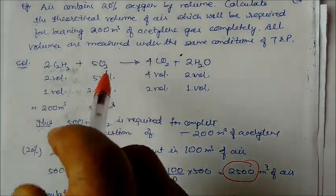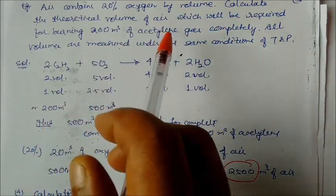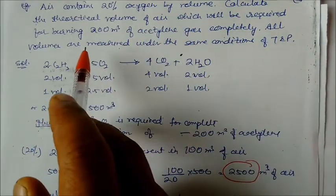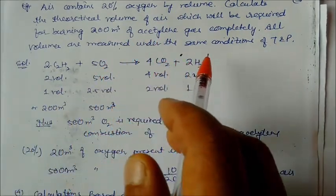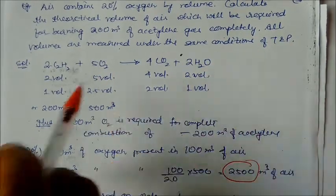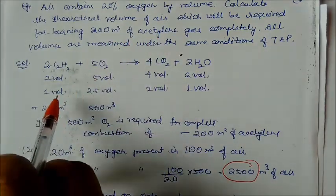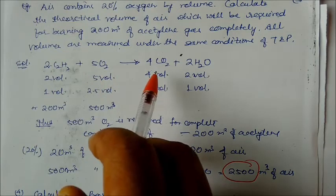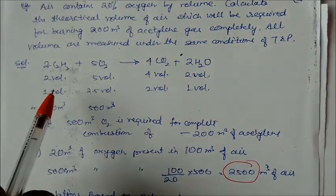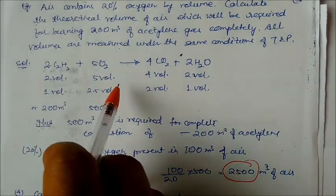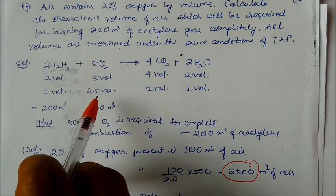Example: Air contains 20% oxygen by volume. Calculate the theoretical volume of air required to completely burn 200 m³ of acetylene gas, with all volumes measured under the same conditions. Write the balanced equation: C₂H₂ + O₂ → CO₂ + H₂O. In terms of volume ratio: 2 volumes acetylene, 5 volumes oxygen, 4 volumes CO₂, 2 volumes water.